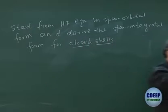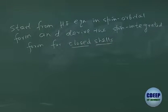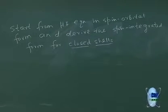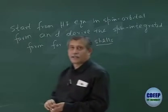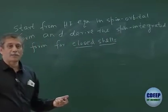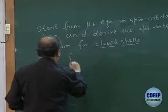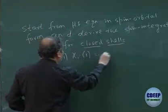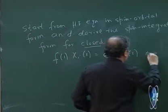This is what we will discuss today. We have derived the Hartree-Fock equation in spin-orbital form. We will try to see how to perform spin integration and get an equation only in terms of spatial orbitals, just as we have done. The Hartree-Fock equation was an eigenvalue equation of the Fock operator — this form is called the canonical Hartree-Fock equation.